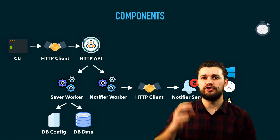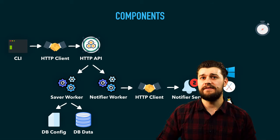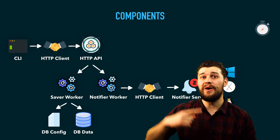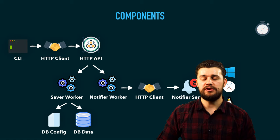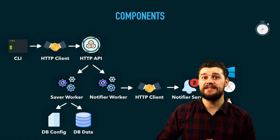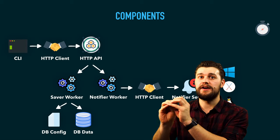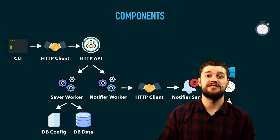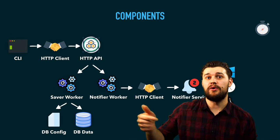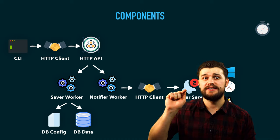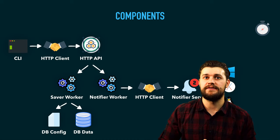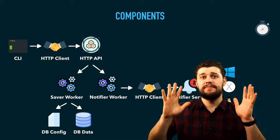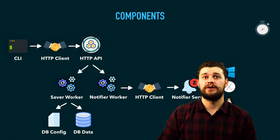The backend API will have under its control two workers. We're going to have a saver worker, which is going to save records once in a while to the disk. We're also going to have a notifier worker, which is going to take uncompleted records and send them to the notifier service. The notifier service sends us an OS notification so we can mark it as completed or delayed for a certain period of time. For the database, we're not going to use anything fancy like MySQL. We're going to use a file database — we're going to store everything in a file called db.json — and we're also going to have a config for that database.